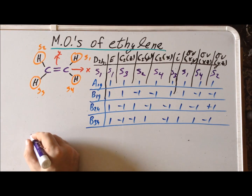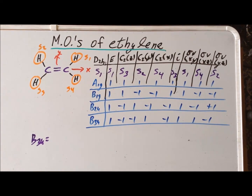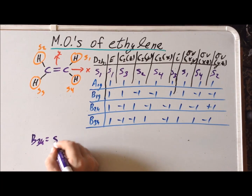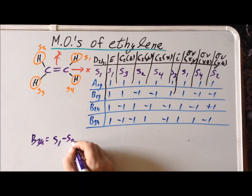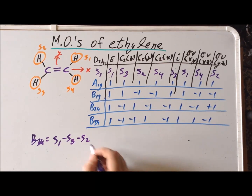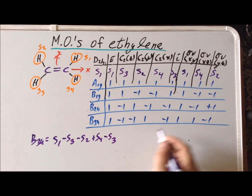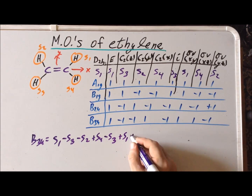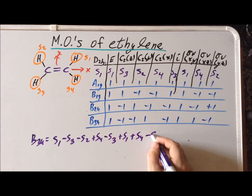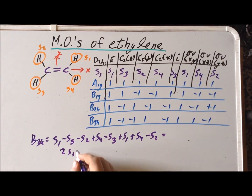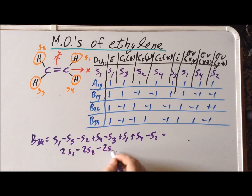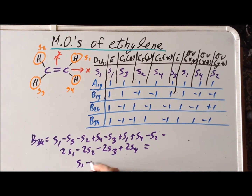Last, we have the B3u combination. Multiplying each of the characters times the appropriate term: S1 − S3 − S2 + S1 + S4 − S2, giving 2S1 − 2S2 − 2S3 + 2S4. Dividing through by two: S1 − S2 − S3 + S4.